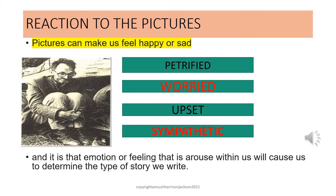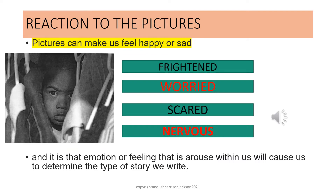When we examine the picture to our left, you will see that it may cause us to feel petrified, worried, upset, or even sympathetic, and it is that emotion or feeling aroused within us that will determine the story we write. In the second photograph, the child looks somewhat frightened, and his appearance will also cause us as viewers to feel frightened, worried, scared, or even nervous — and it is that emotion that will cause us to determine the type of story we write.